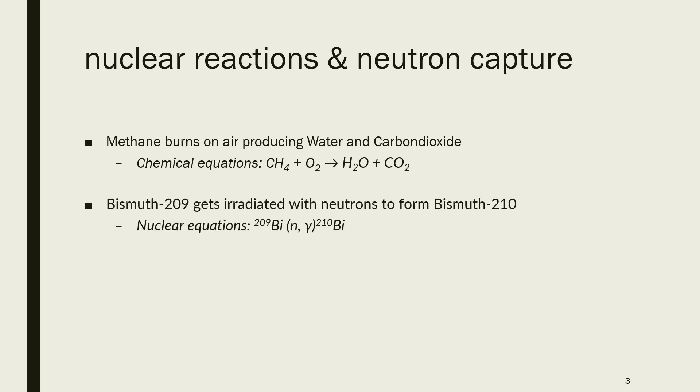And for nuclear chemistry, we have a similar thing. For example, if you have Bismuth-209, which gets irradiated with neutrons to form Bismuth-210, you can write this down in a nuclear reaction. You have your target, which is in this case the Bismuth-209, then you have your projectile, which is the neutron. You have your ejectile, which is a high-energy gamma photon, and then you have your residue, which is in this case the Bismuth-210.